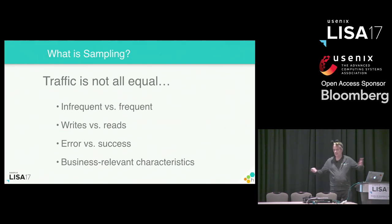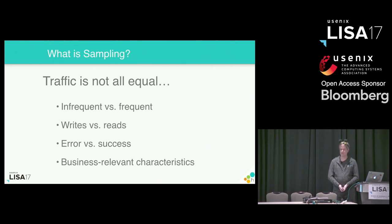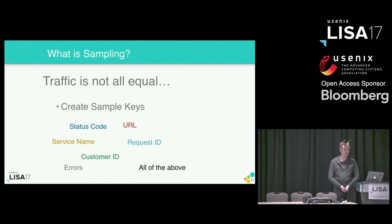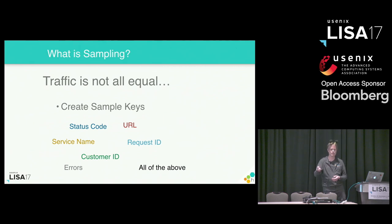And so people say, I don't want to miss those edge cases — I'm just going to collect everything and deal with the side effects. But I think we do have an advantage over science that has to be impartial. We can impose our goals and our desires about which traffic is more important on the samples that we create. We can choose aspects of the traffic and say, this part here is an indicator of how interesting this traffic is going to be to me.